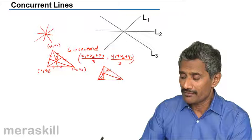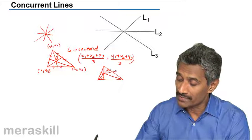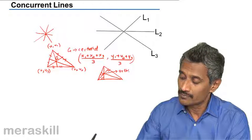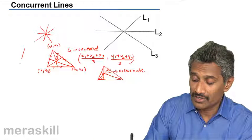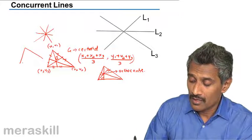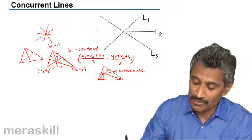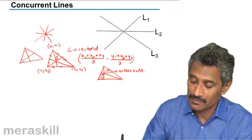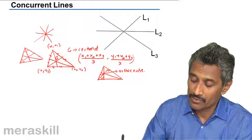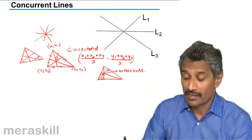Similarly, if you have a triangle, the three angle bisectors will also be concurrent. The angle bisectors will pass through a single point, and this is called the incenter.